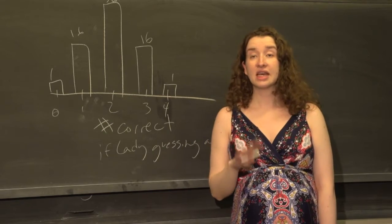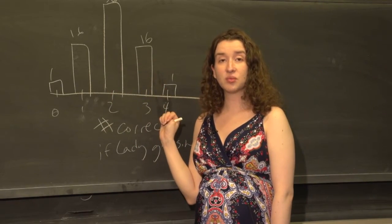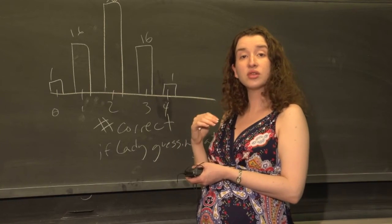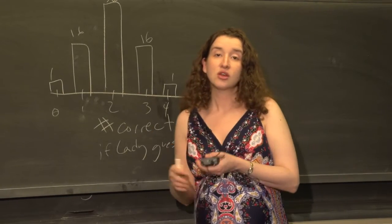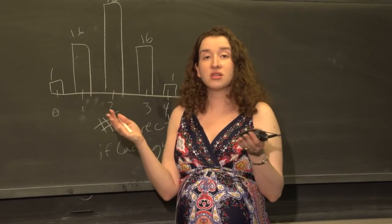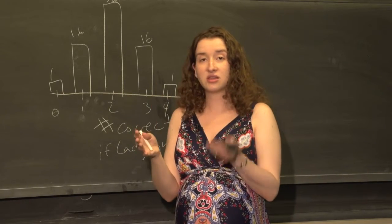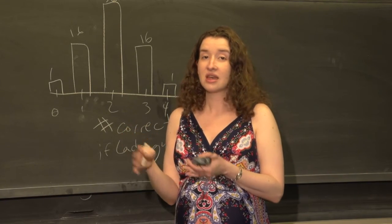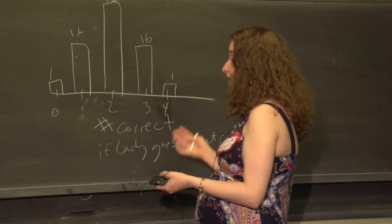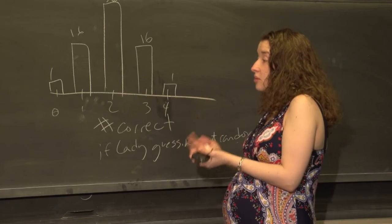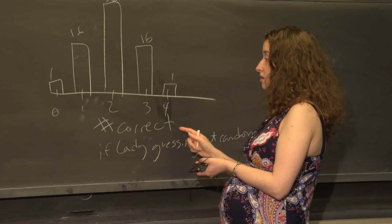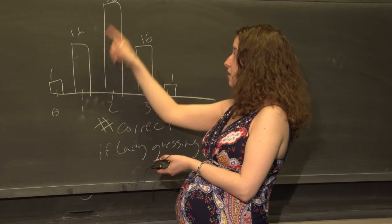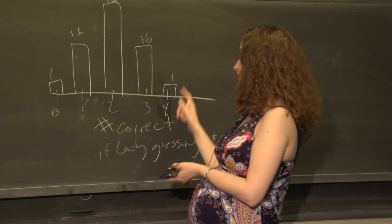Assuming the lady is guessing at random, this is the distribution of the number of cups she might get correct. A distribution is just a list of numbers along with the probability of each of those numbers. For example, if I flip a coin, the distribution is heads or tails, each with probability 0.5. If I roll a die, the possible values are 1, 2, 3, 4, 5, and 6, each with probability 1 out of 6. Here, if the lady chooses 4 cups at random, the number of cups she could get correct is 0, 1, 2, 3, or 4, with probabilities 1/70, 16/70, 36/70, 16/70, and 1/70 — the total being 70.